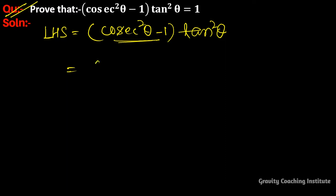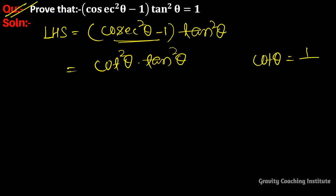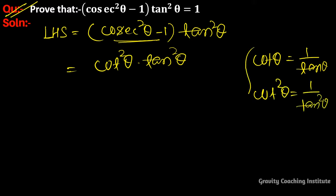So we have cot square theta into tan square theta, and we know that cot theta is equal to 1 upon tan theta, so cot square theta is equal to 1 upon tan square theta.